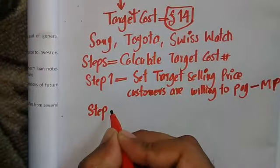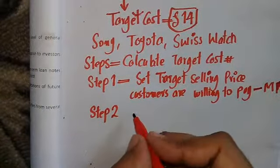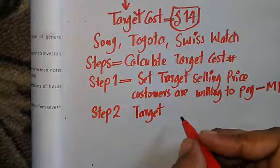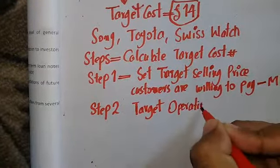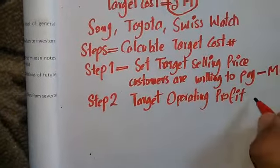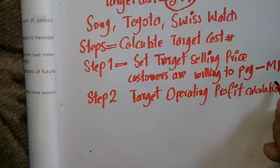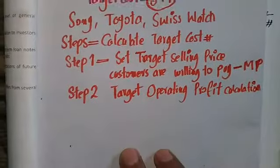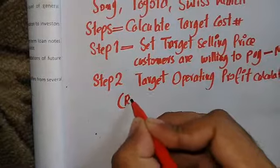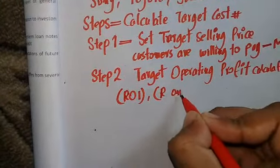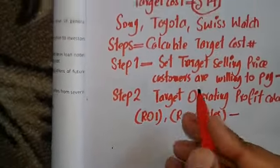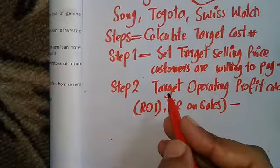Step two is to determine the target operating profit for the organization. We will calculate the target operating profit by using Return on Investment (ROI) or Return on Sales (ROS). So we have the target selling price from the market, and then we determine the target operating profit.